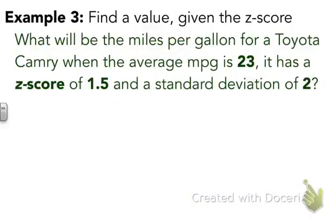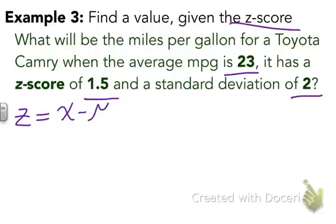To give you another example, you can find a specific value if you're given a z-score. In other words, we're going to work backwards if we know the z-score of a particular data point. What will be the miles per gallon for a Toyota Camry when the average miles per gallon is 23? It has a z-score of 1.5 and a standard deviation of 2. Again, looking at our formula, z equals x minus mu over sigma. We've been given our z-score of 1.5. Average mpg is the mean and sigma is 2 in this case.